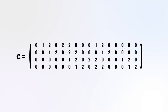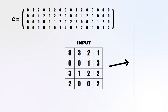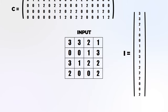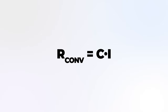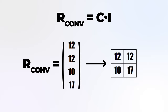Now that we have this convolution matrix — let's call it C — what do we do with it? We flatten our input into a vector with one column and 16 rows, call it I. Then we just calculate the dot product between C and I. This returns a 4x1 matrix, which we can reshape into a 2x2 matrix, and that is basically the result of the convolution.